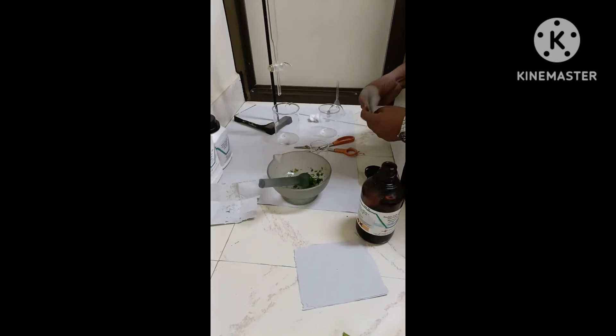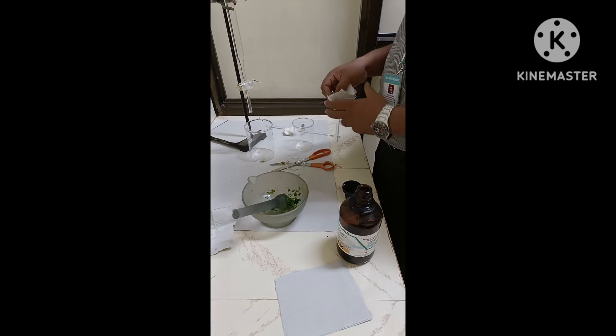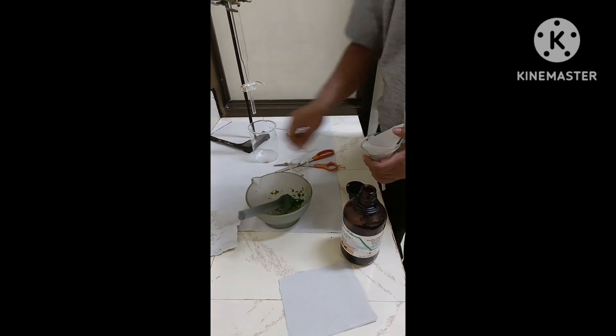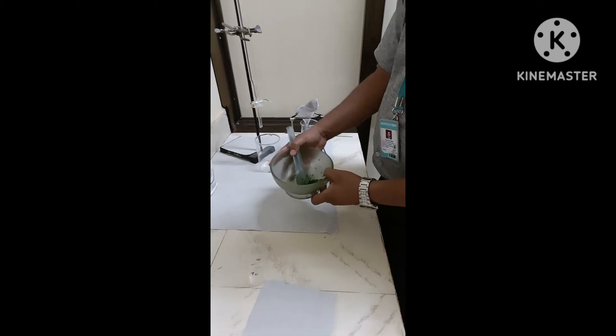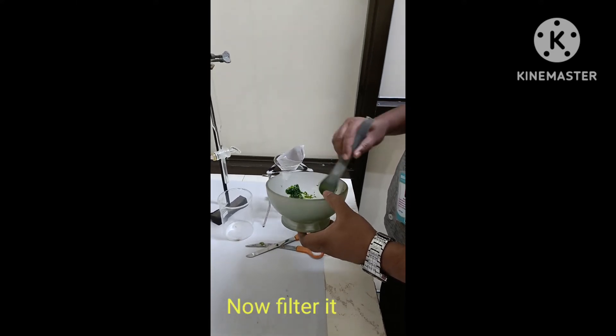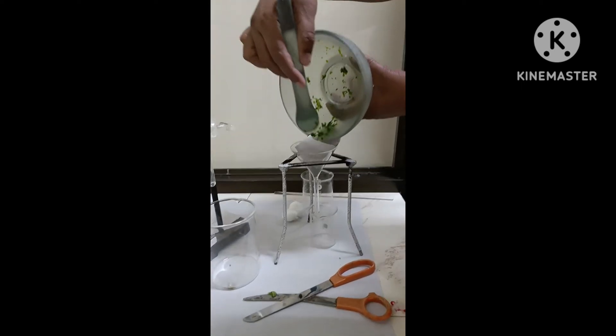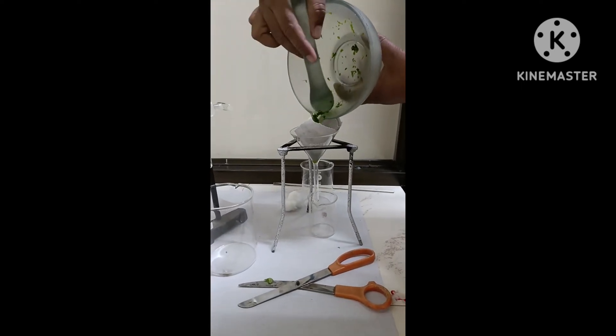Now we can add a little amount of acetone in the triturate and then transfer to the separating funnel. Now we can filter out using the simple filter paper and we can get the extract.